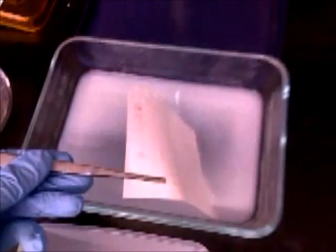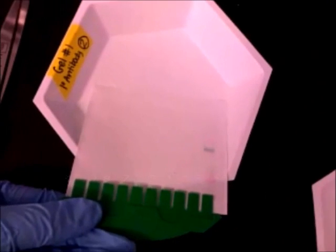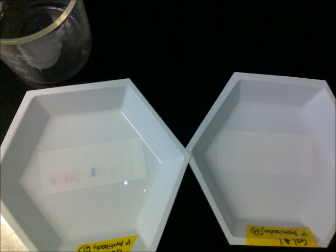Next, place the membrane in a weigh boat. Using the comb to determine the location of the lanes, cut along lane 6. This is what the membrane looks like after it's been cut.